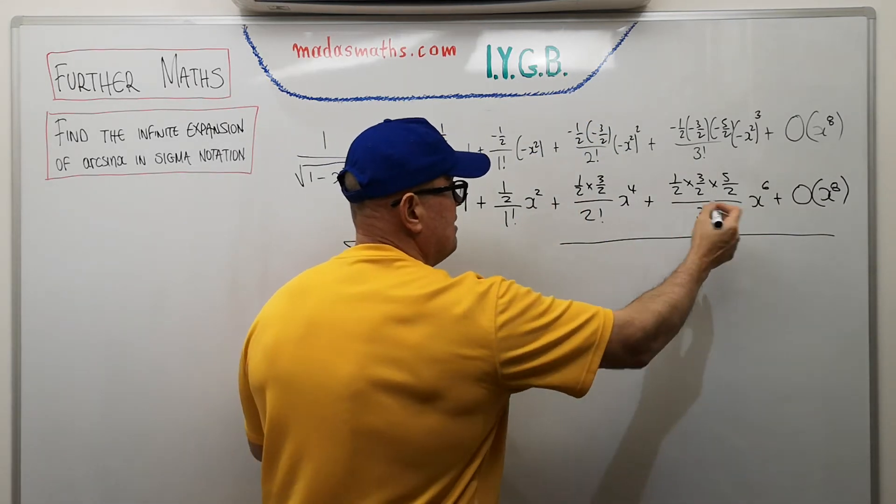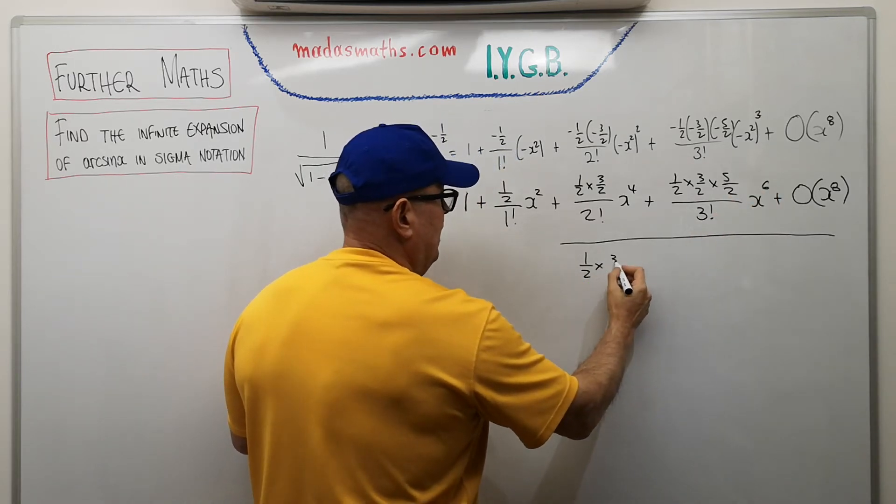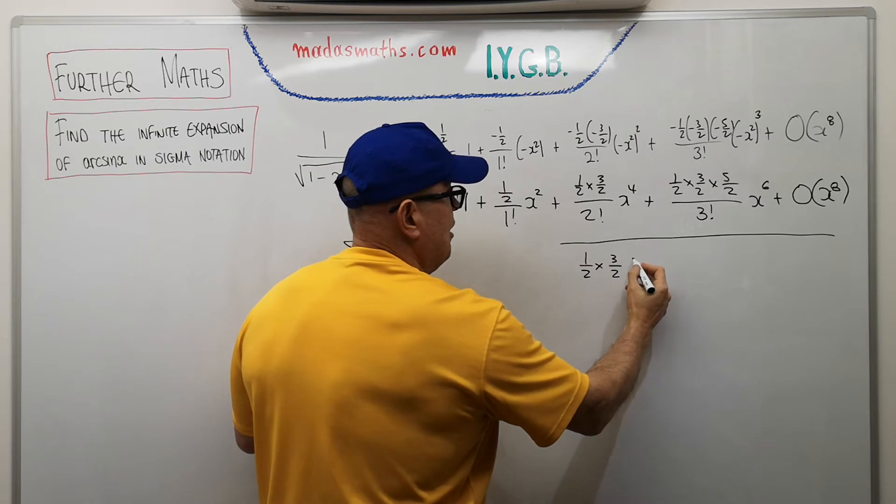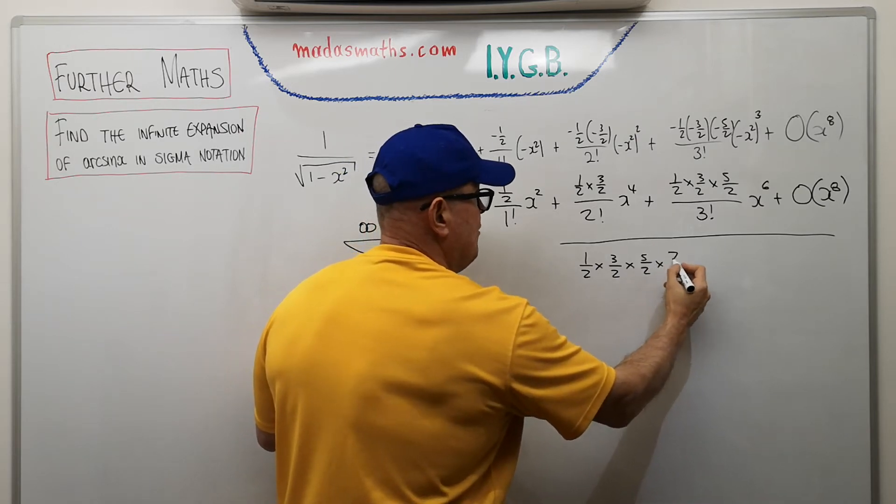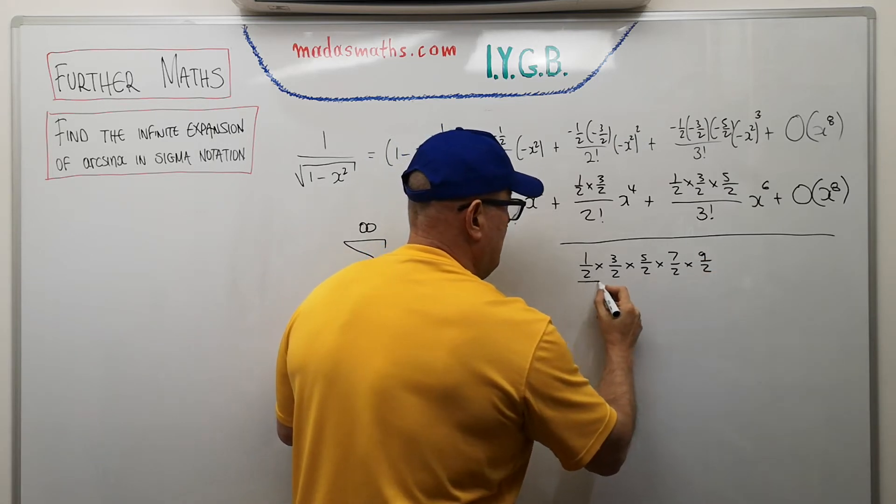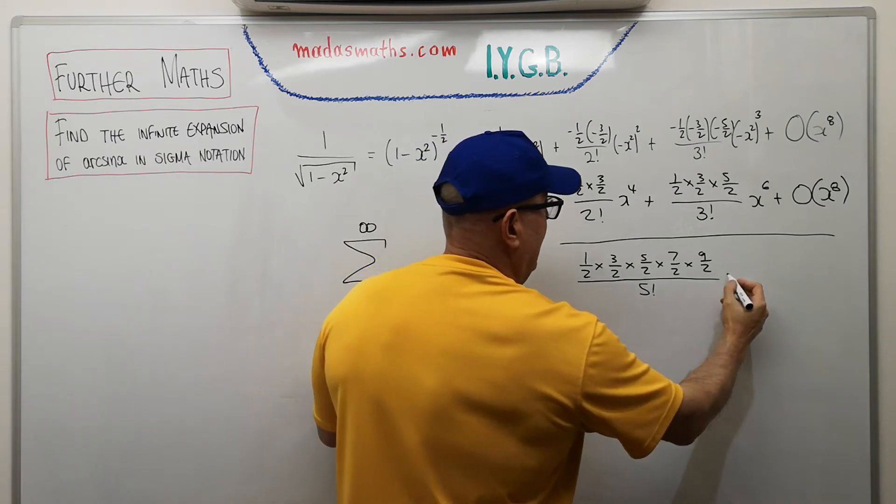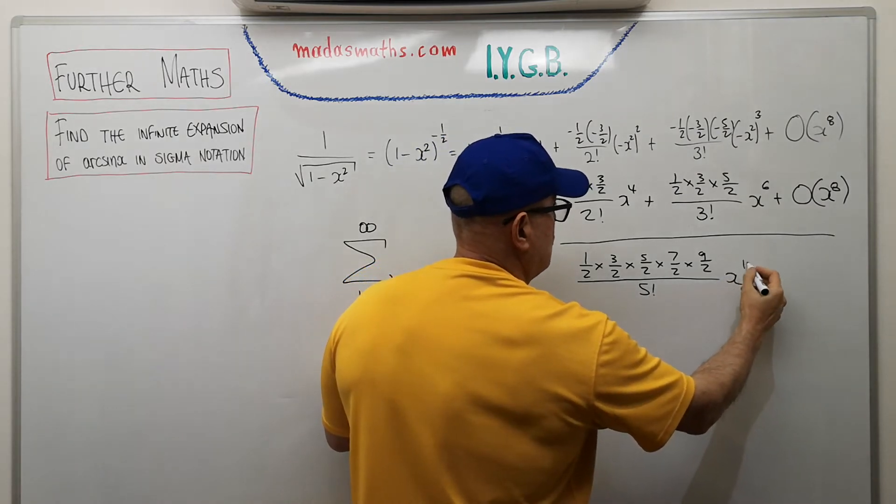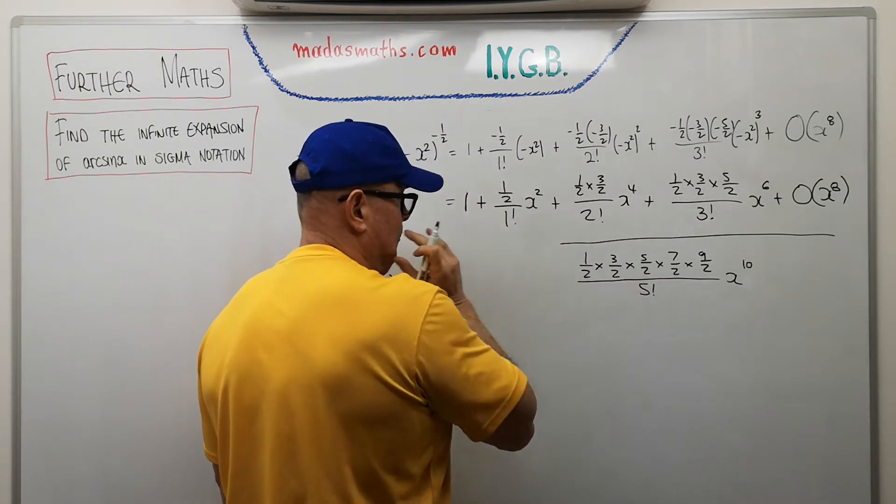So let's say, what does the x to the power of 10 will look like? Well, quite clearly, it's just two more terms down the line. So it will look something like this, seven over two, nine over two, or positive, of course, I'm expecting it to be, over a five factorial there. And the power, of course, would be x to the power of 10.